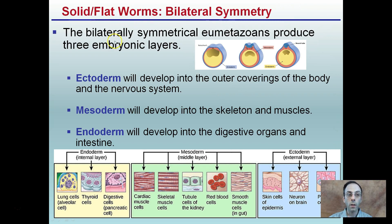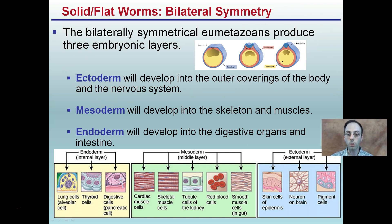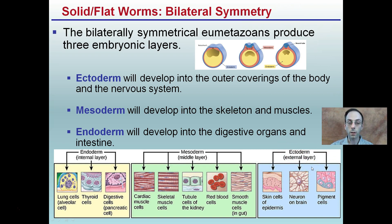Flatworms' bilateral symmetry produces three embryonic layers — sometimes called germ layers. Ectoderm will develop the outer coverings of the body and nervous system; 'ecto' means external. Mesoderm will develop the skeleton and muscles — that's the middle layer. I've referenced the human body here in hopes that you make a better connection.